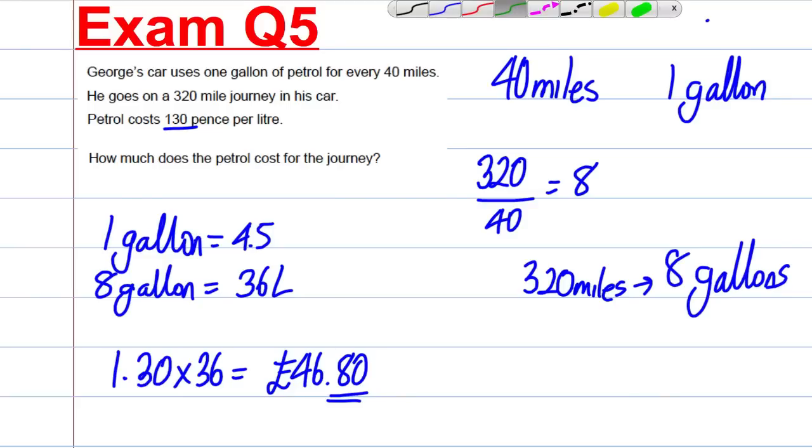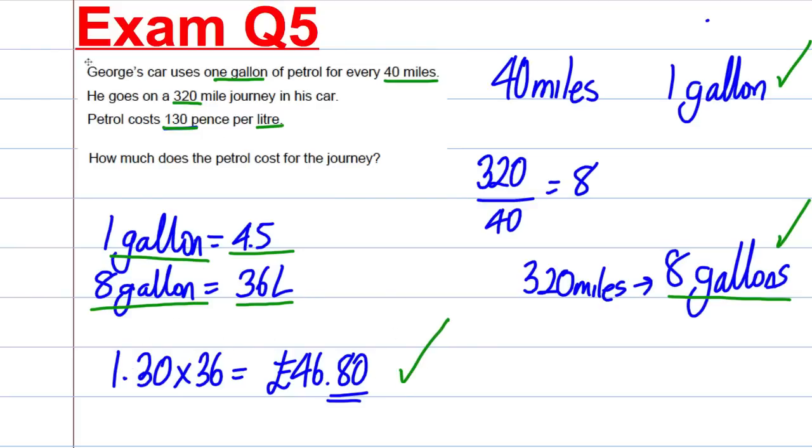So let's just recap this. The first thing we do is we write down that he goes 40 miles in 1 gallon. In a 320-mile journey, he then must use 8 gallons. We get our mark for that. We then need to, we are told that it's £1.30 per litre. So we have to convert 8 gallons to litres. We know 1 gallon is 4.5. So 8 gallons must be 4.5 times 8, which is 36 litres. And it's £1.30 every litre. So £1.30 times 36 gives you the petrol cost.